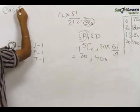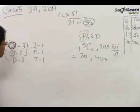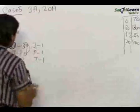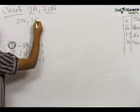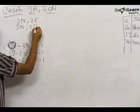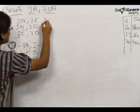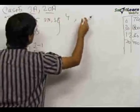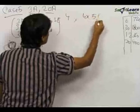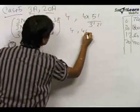Case 5: Three alike and two other alike. The possible combinations are: 3N+2E, 3N+2D, 3E+2D, and 2N+3E — giving 4 cases. The number of words formed for each is 5!/(3! × 2!) = 120/12 = 10. So total words = 4 × 10 = 40. Selections = 4.